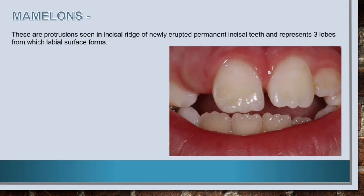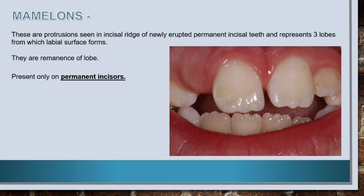Now let's have a look at mamelons. These are protrusions seen on the incisal edge of newly erupted permanent incisor teeth and represent the three lobes from which the labial surface forms. They are remnants of lobes and are present only on permanent incisors.